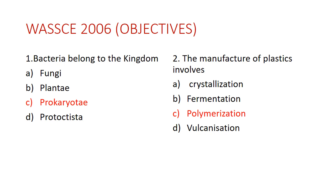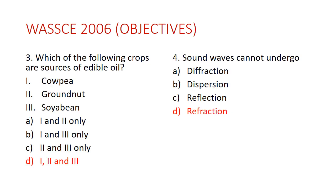Question three: which of the following crops are sources of edible oil? The options list various crop combinations. The answer is D — all the listed crops (copra, groundnut, and soybean) are sources of edible oil.